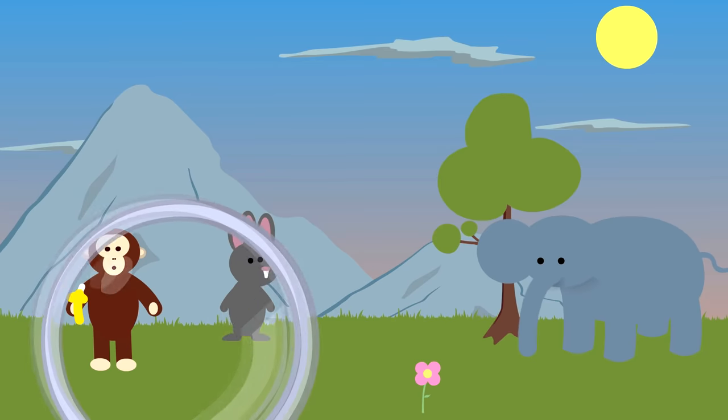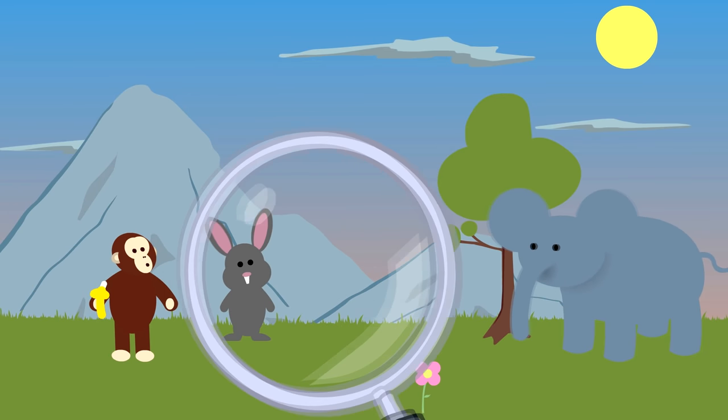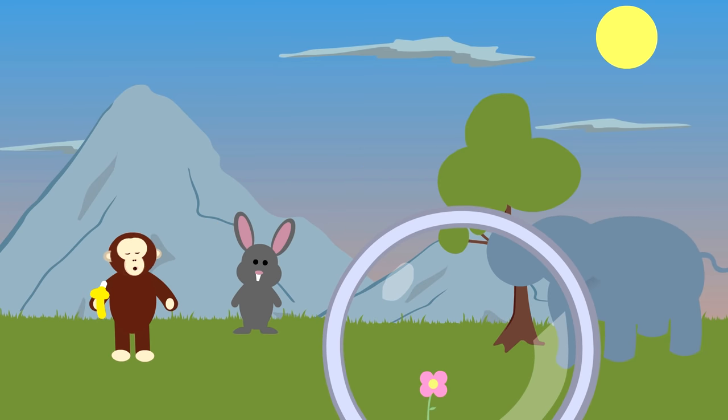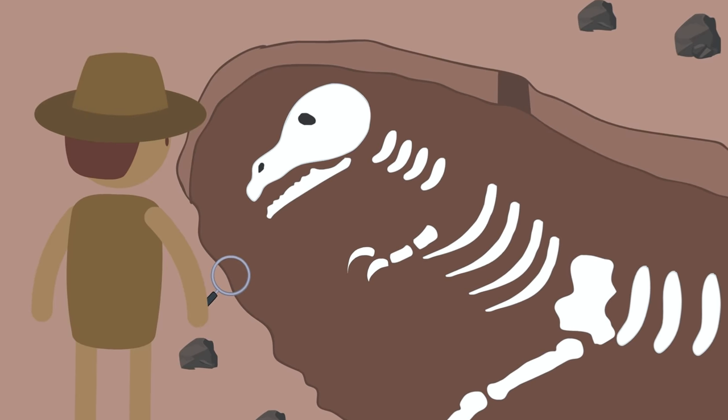This theory grew from studying the variations and similarities in living animals and plants but also very importantly by studying fossils.